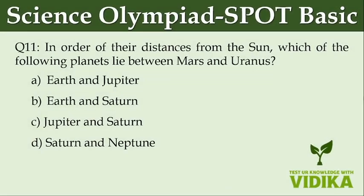In order of their distances from the Sun, which of the following planets lie between Mars and Uranus? Option A: Earth and Jupiter. Option B: Earth and Saturn. Option C: Jupiter and Saturn. Option D: Saturn and Neptune.